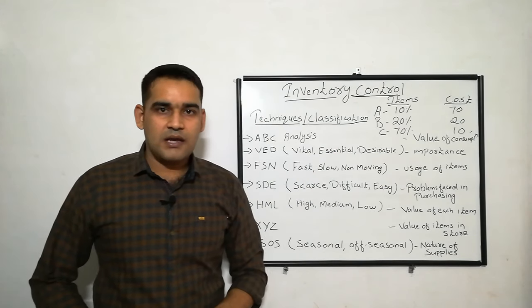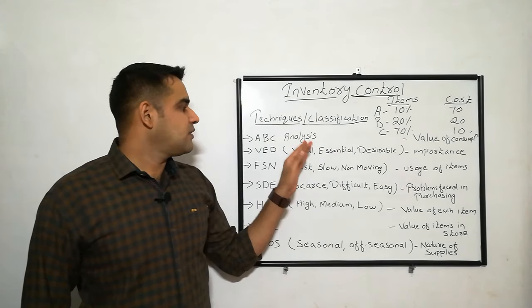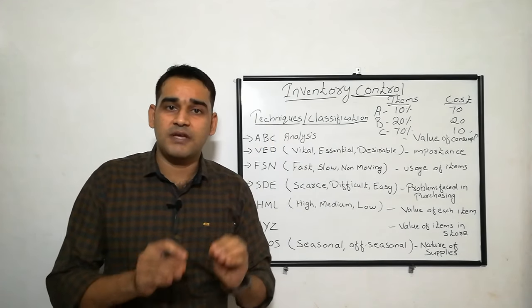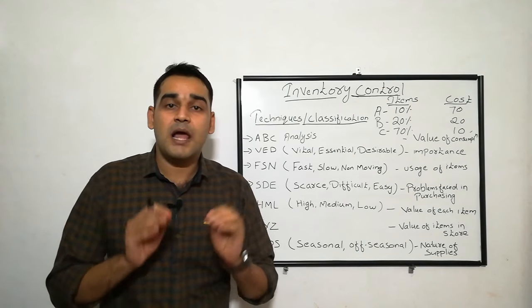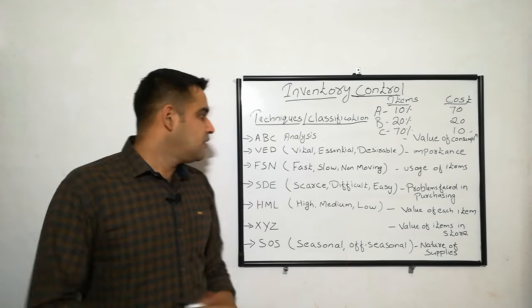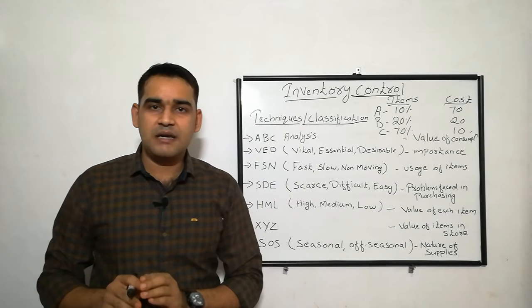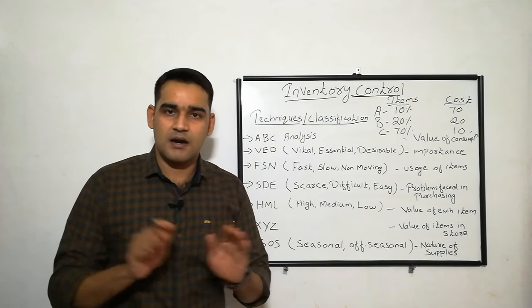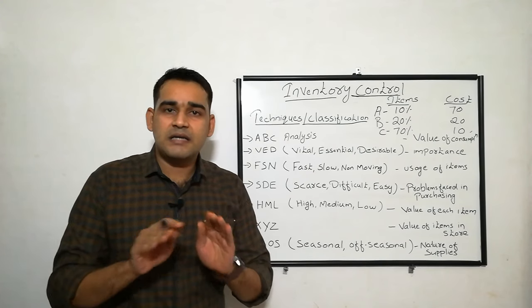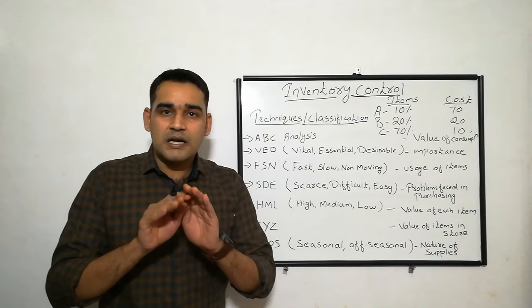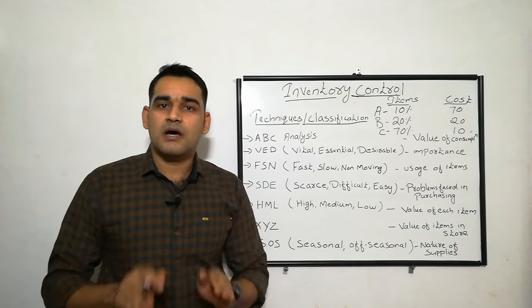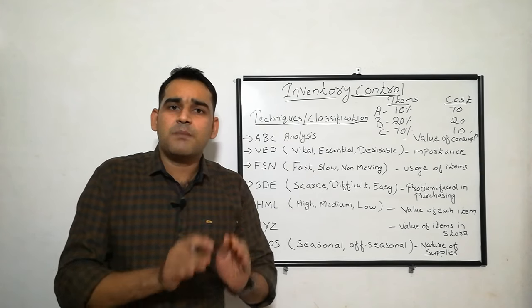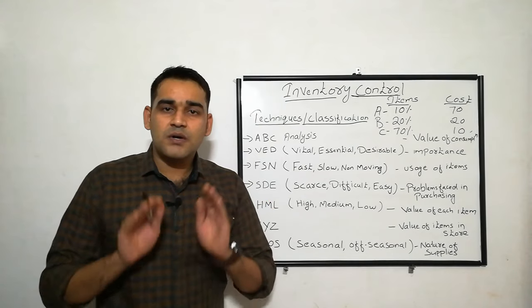Next is VED analysis — that is Vital, Essential, and Desirable. The basis for this classification is the importance of the item. V means Vital — the most important one. Without the vital item, a hospital can't run; the working condition of the hospital will not occur. For example, oxygen supply — if oxygen supply is not there, it is very difficult to run a hospital. So it comes under the Vital category.